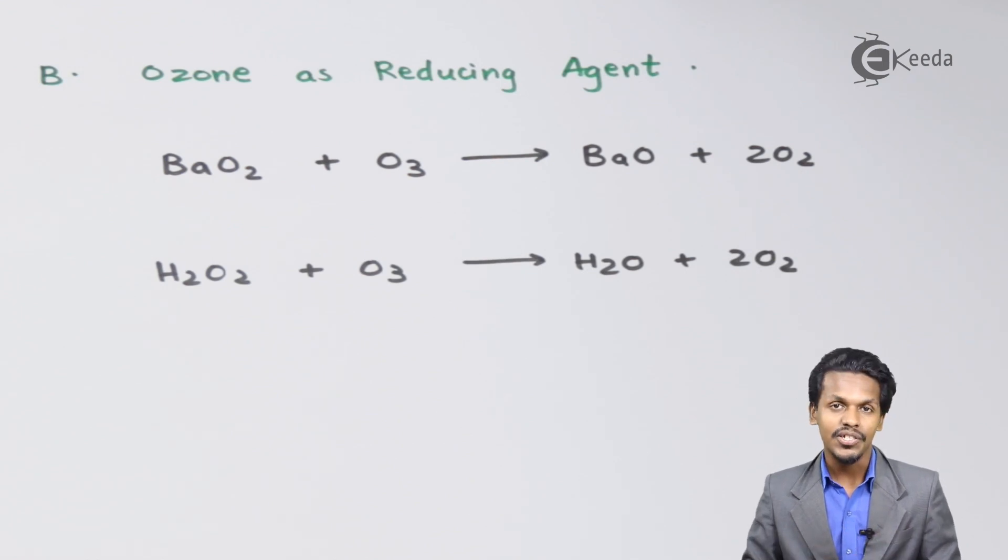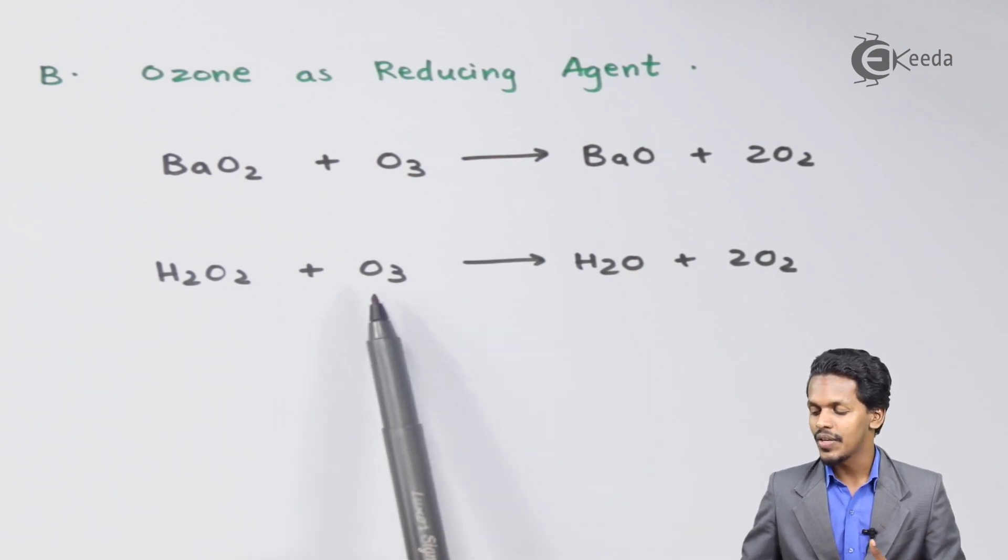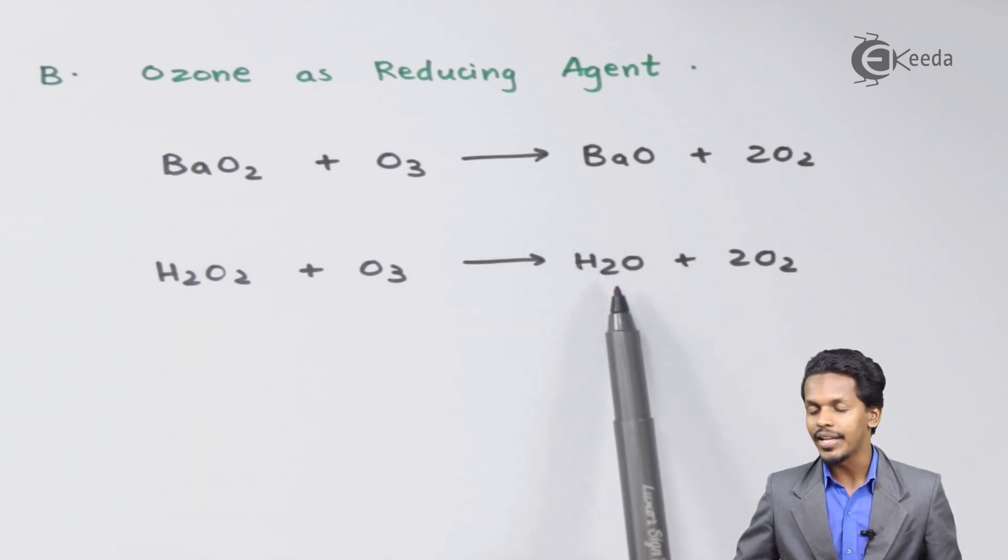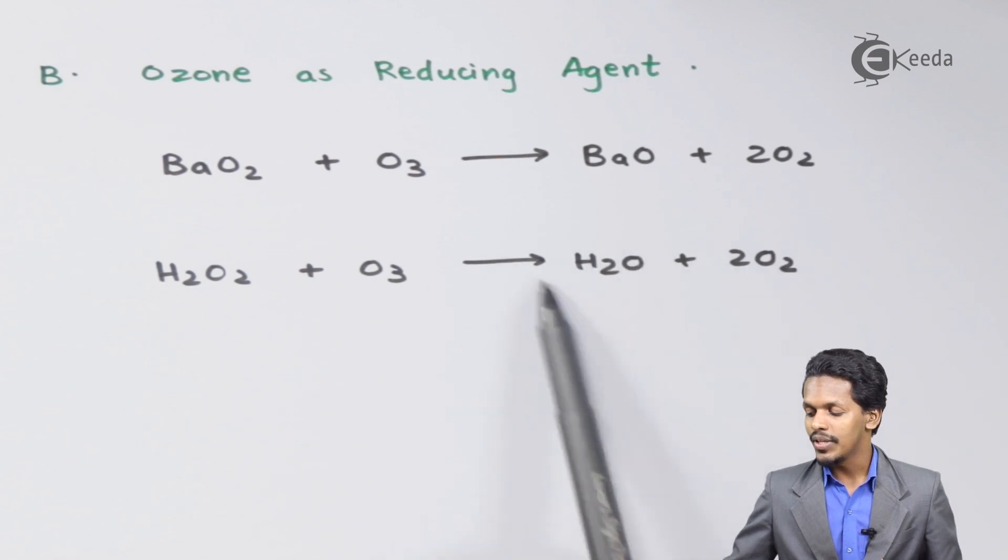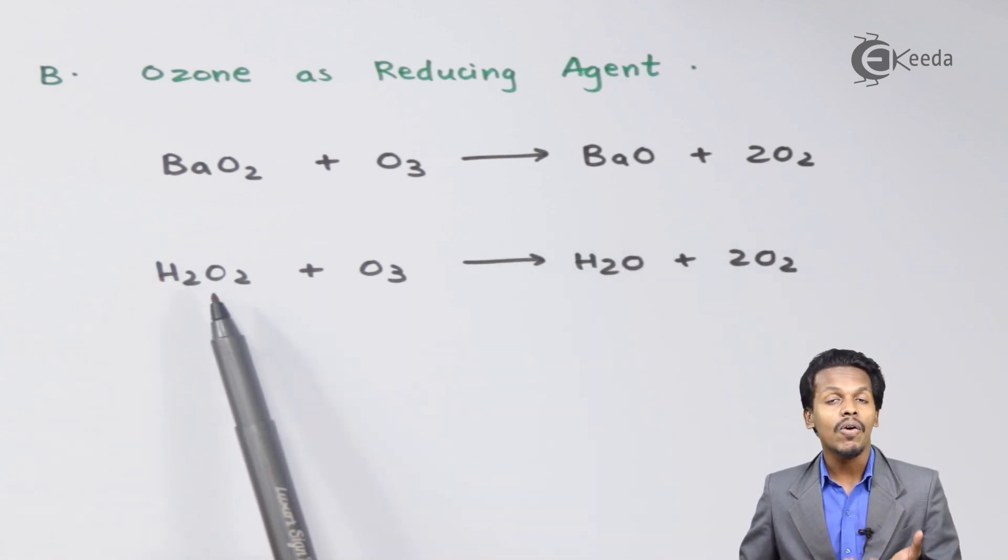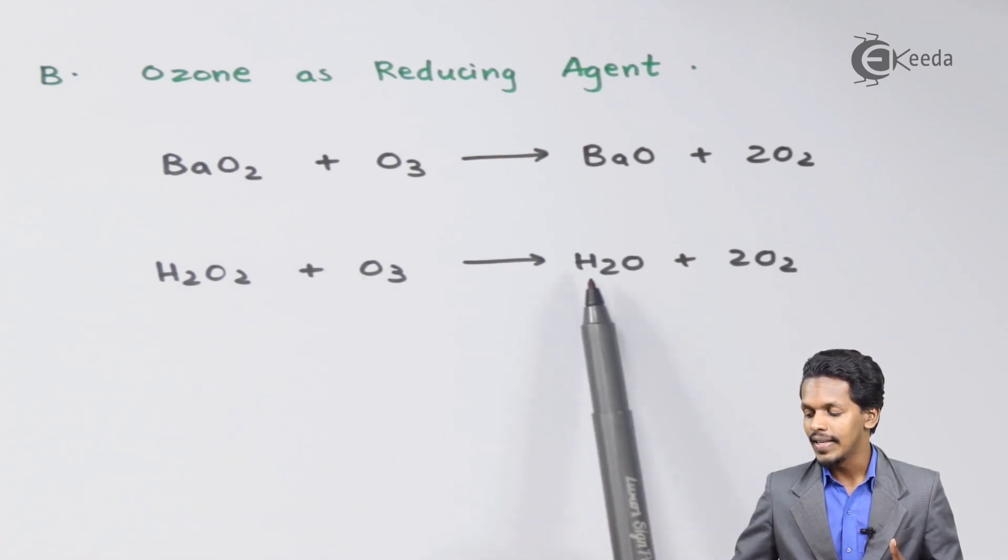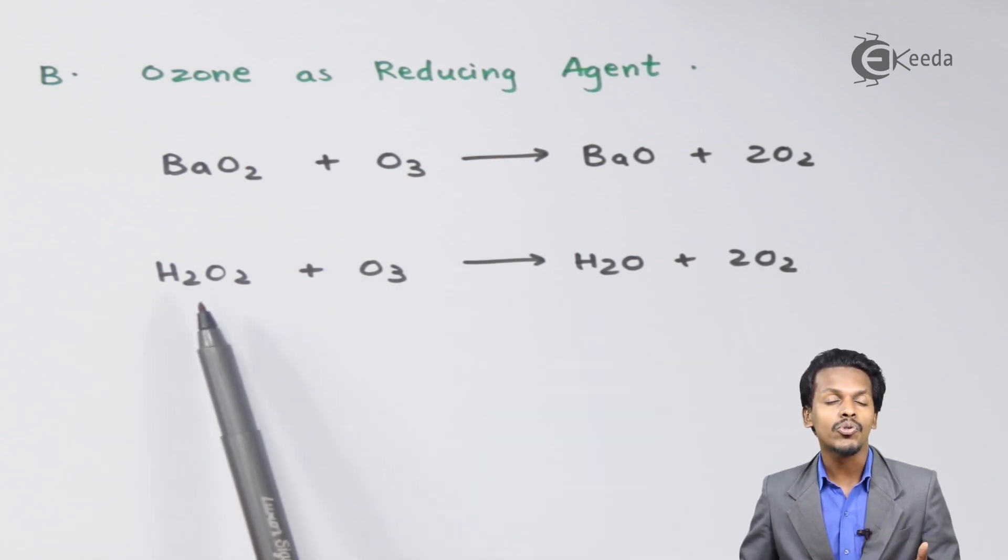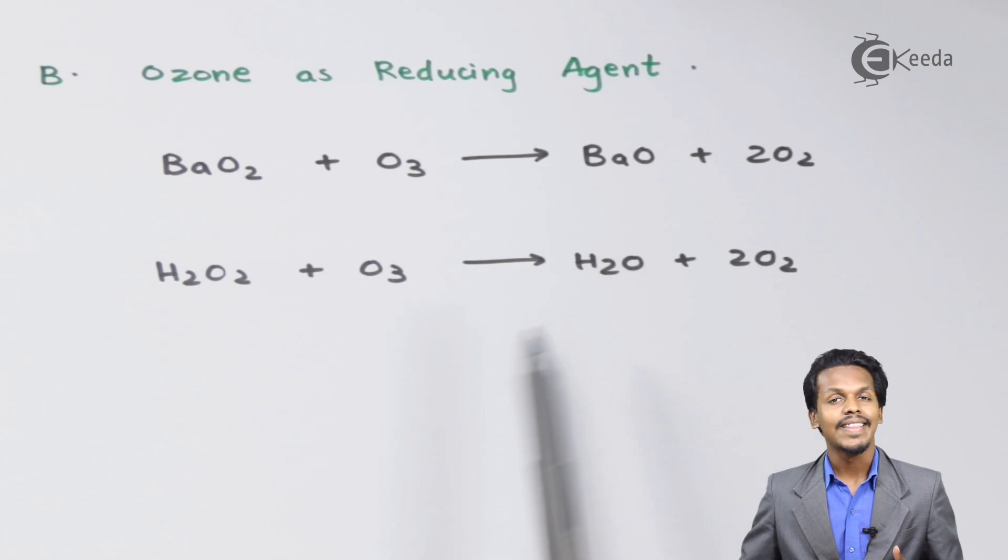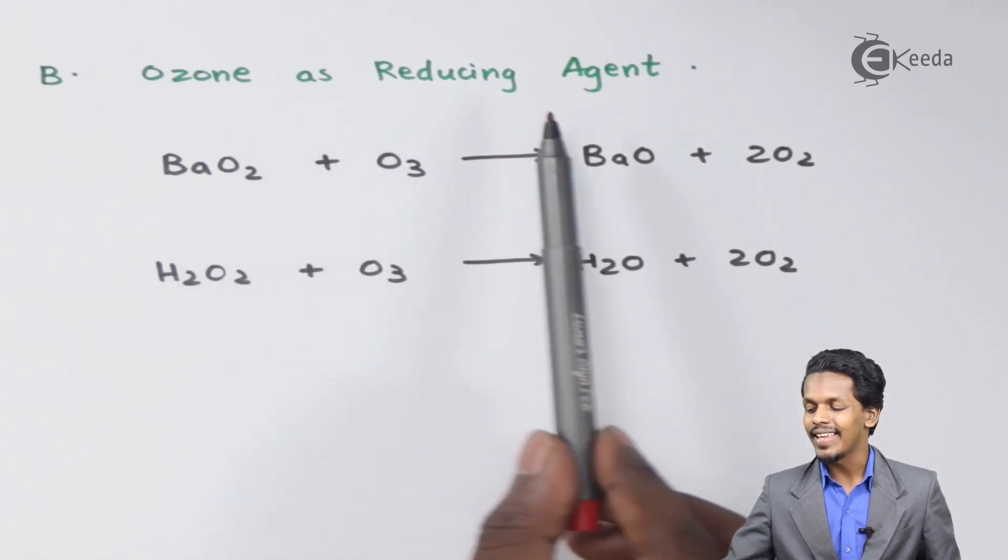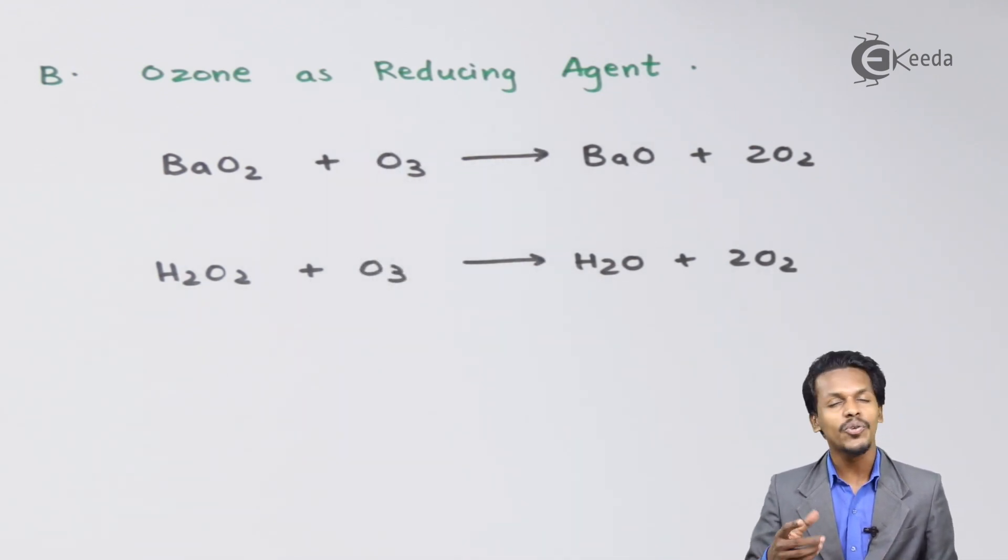Another example: suppose we consider hydrogen peroxide, H2O2, and if we are treating it with ozone, this H2O2 will turn into H2O plus two moles of O2. Here also we can find that there was an oxygen in H2O2, but after the reaction, H2O is only associated with one oxygen, which makes ozone act as a reducing agent. Therefore, these were the two properties I wanted to discuss.